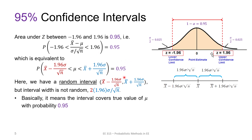We multiply both sides by sigma over square root of n and then subtract to get mu in the middle, producing a random interval. The width of this interval is 2 times 1.96 times sigma over square root of n, since it is symmetric. If you are within that range, you expect a 95 percent confidence interval — meaning the interval covers the true value of mu with probability 0.95.